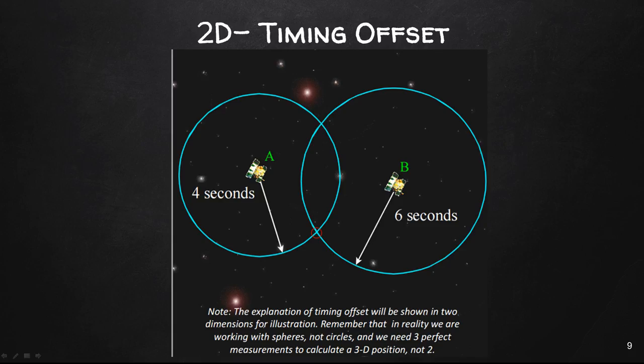Here we're going to look through this example of 2D timing offset. In an ideal situation, there would be no timing error. Let's say we're four seconds from satellite A and six seconds from satellite B. Our position is where the two circles intersect. We could throw out the other position because it's nowhere near the Earth. Remember, in 3D it takes three measurements to get to this point, but we're looking at this from 2D to make it more easily understandable.